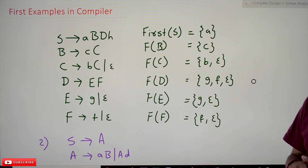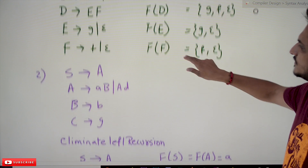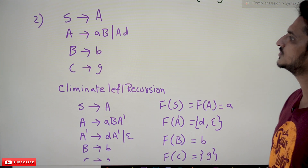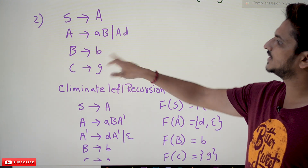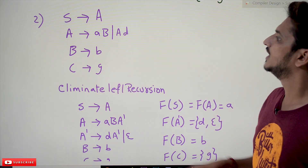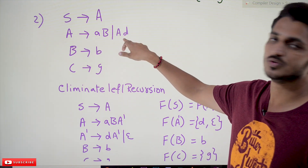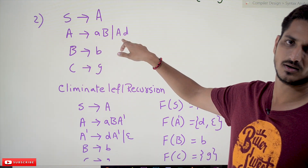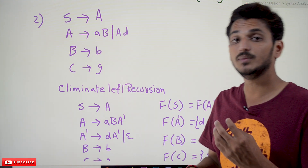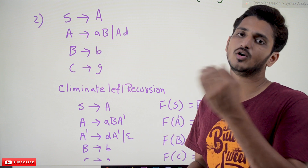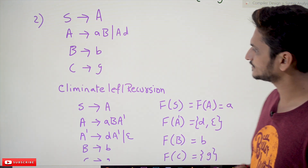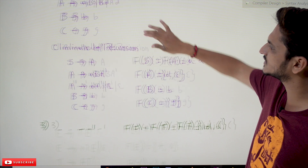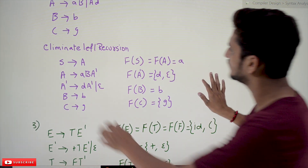Now coming to the next example: S tends to A, A tends to A B or A D, B tends to B, C tends to G. This is a left-recursive grammar, so we need to eliminate left recursion before we identify the FIRST symbols. How to eliminate left recursion was discussed in our previous classes.